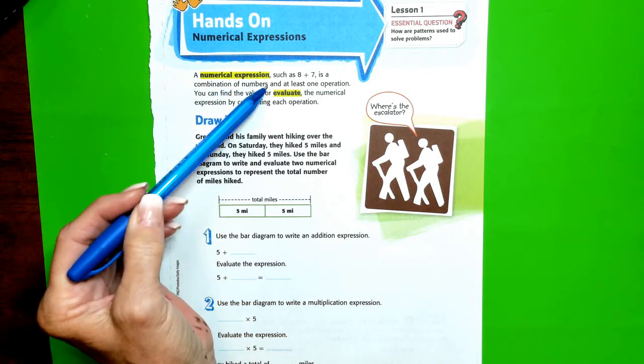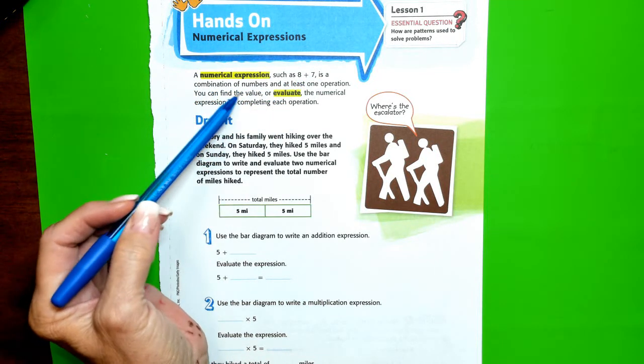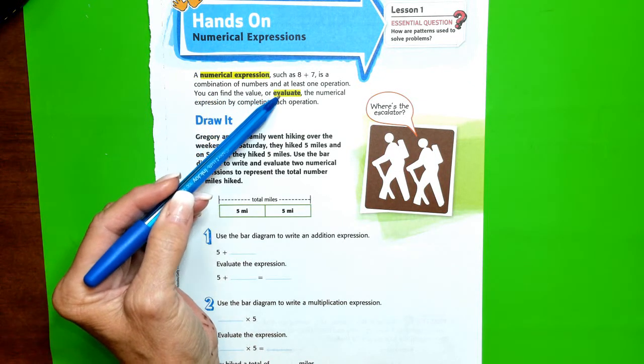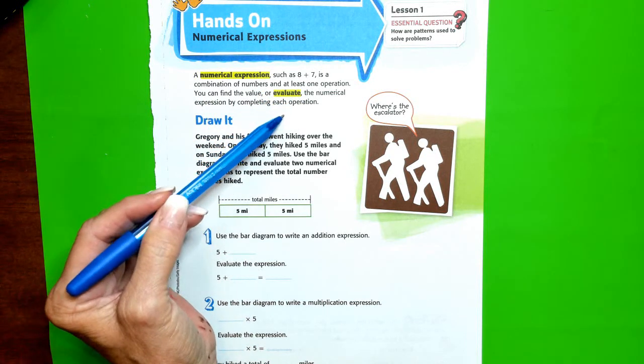A numerical expression such as 8 plus 7 is a combination of numbers and at least one operation. You can find the value or evaluate the numerical expression by completing each operation.